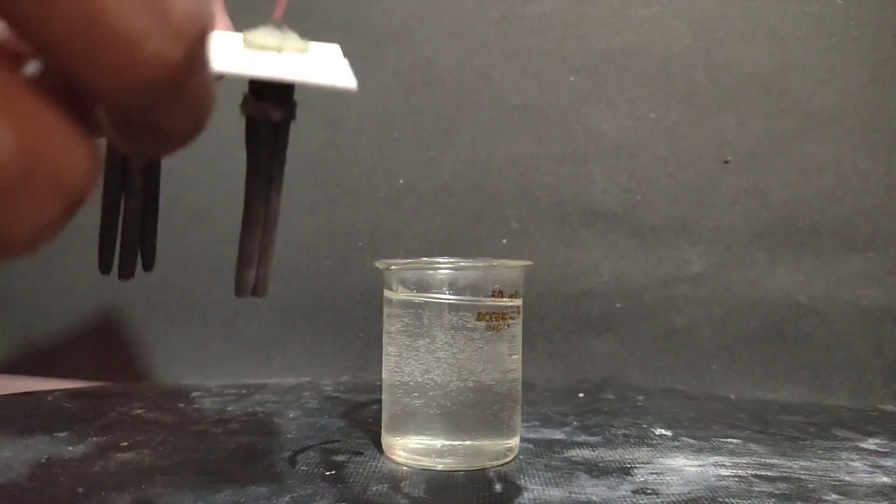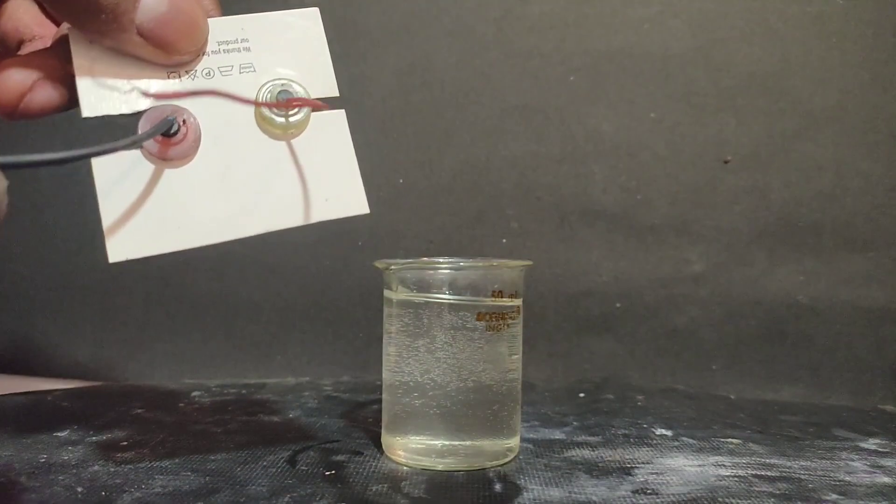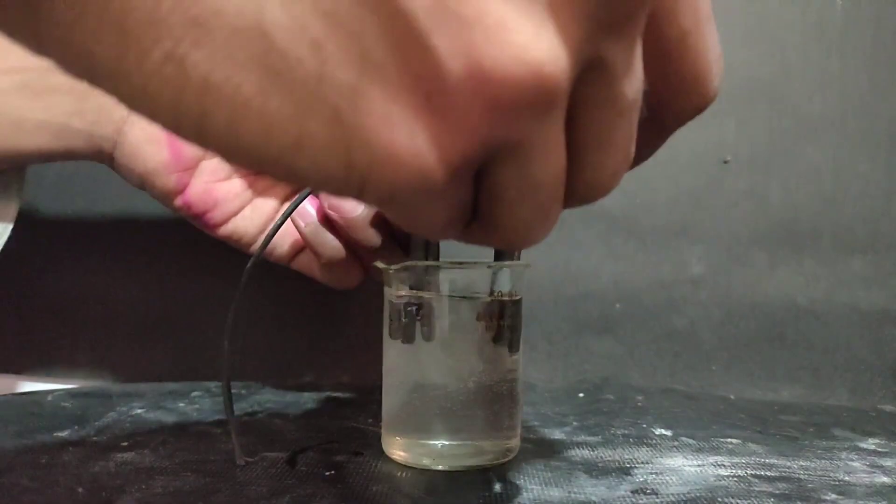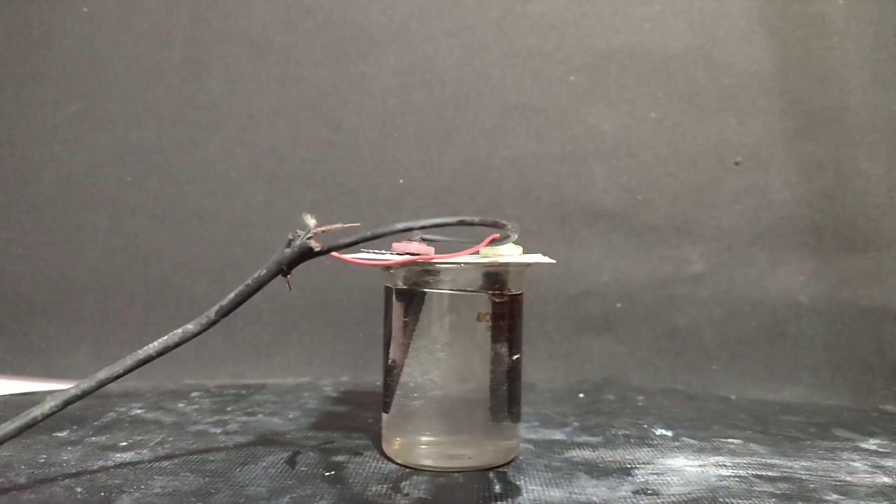Then I took my graphite electrodes and placed them in a card and placed the card over the beaker. I connected the electrodes to my 18 watt mobile charger.